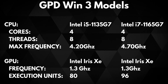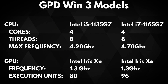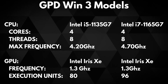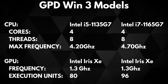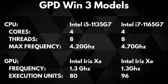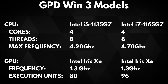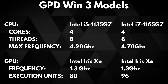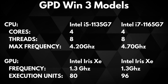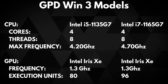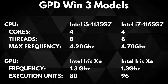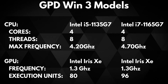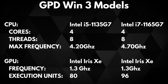The differences between the two models are essentially down to the processor and integrated graphics. The i5 processor is the 1135G7 version, which is a quad core with 8 threads running up to 4.2GHz. The i7 processor is the 1165G7 version, which also has quad core with 8 threads but runs up to a faster 4.7GHz.